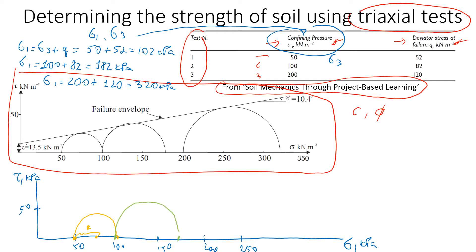For the third circle, we know that the confining pressure is 200, so this is sigma 3. The major principal stress at failure will be 320, somewhere here.